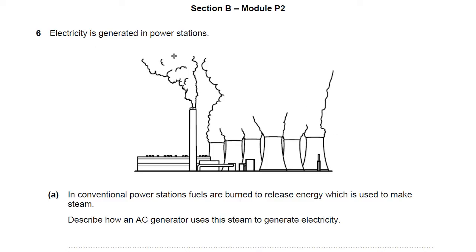Electricity is generated in power stations. In conventional power stations, fuels are burned to release energy which is used to make steam. Describe how an AC generator uses this steam to generate electricity.